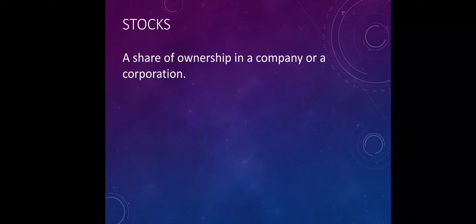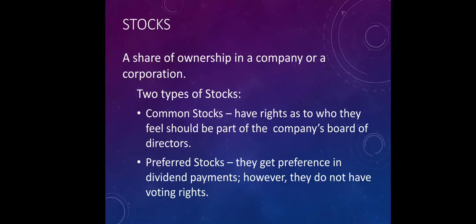When we say stocks, this means a share of ownership in a company or a corporation. There are two types of stocks: common stocks and preferred stocks. For common stocks, this gives the owner the rights as to who they feel should be a part of the company's board of directors — so this gives the stockholder certain voting rights. For preferred stocks, they only get the preference in dividend payments; however, they do not have voting rights.